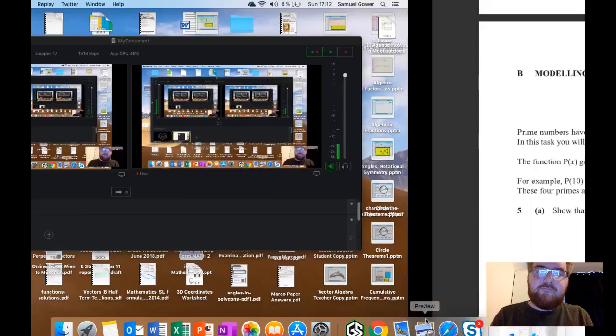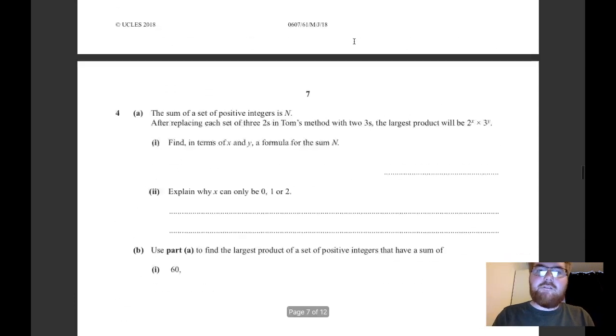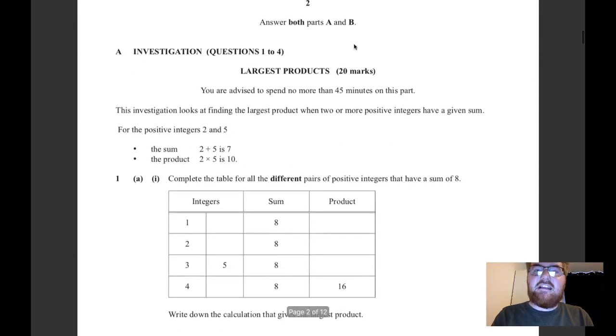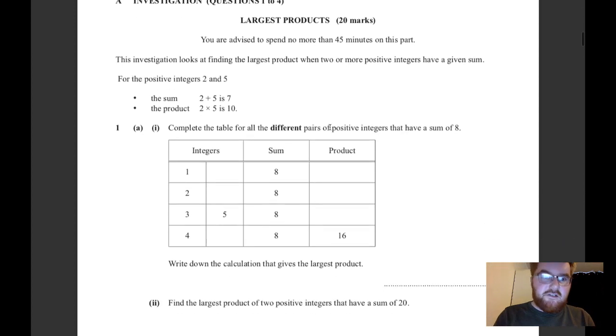This comes from June 2018. There are two different parts of the paper. The first part is an investigation, and the key thing to remember is that it leads you through how to go about doing the question. It's all about reading the question so you know what's going on, and if it's a case of highlighting key information, then by all means do that.